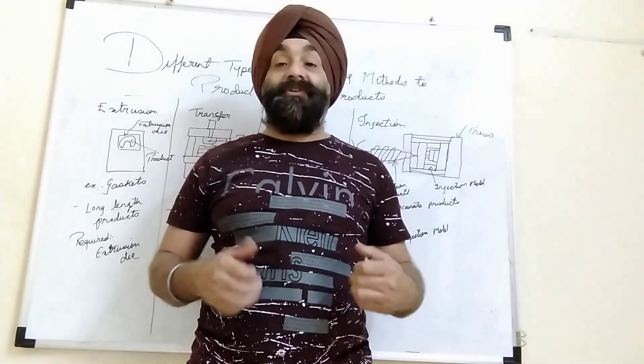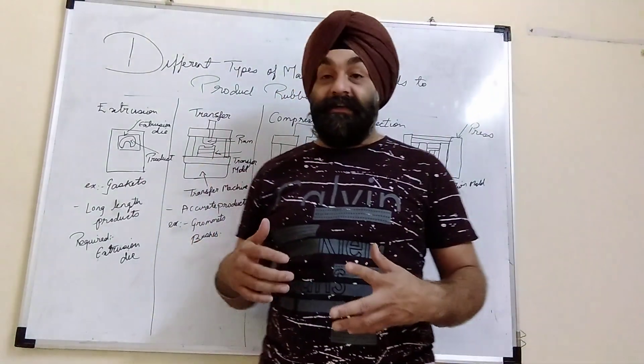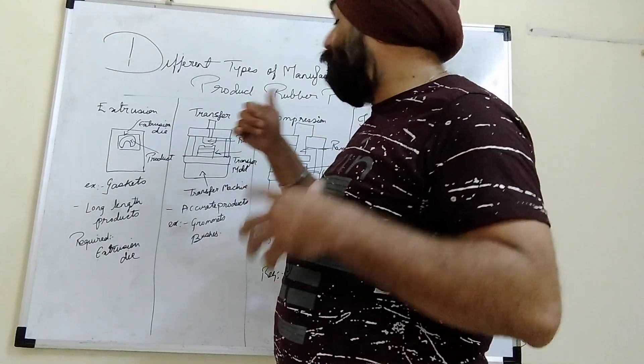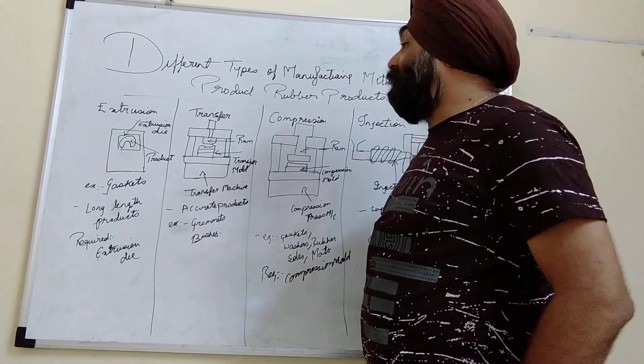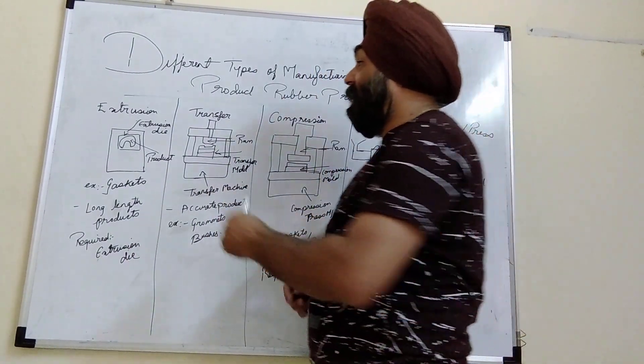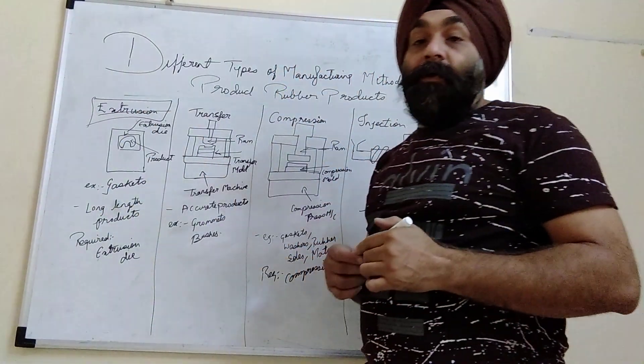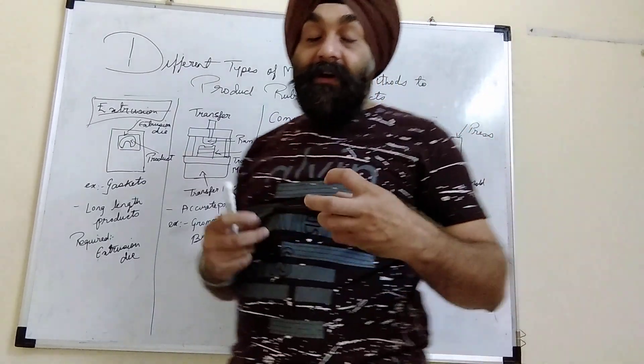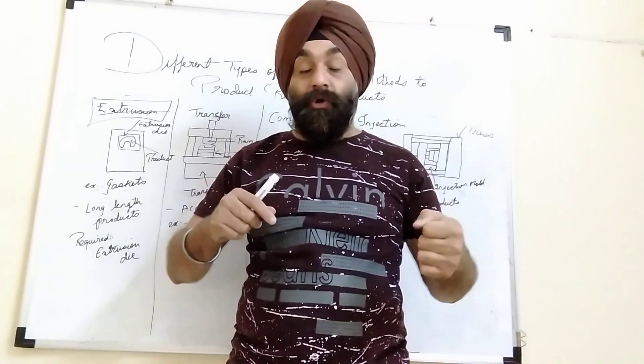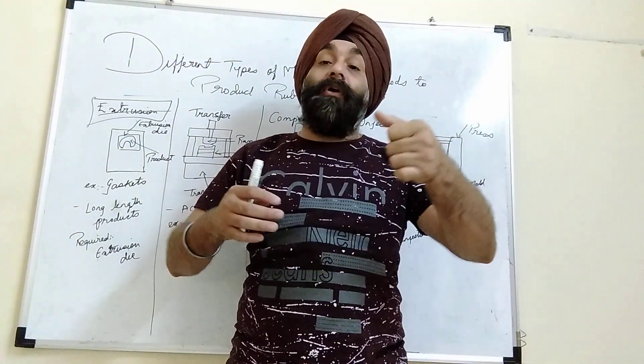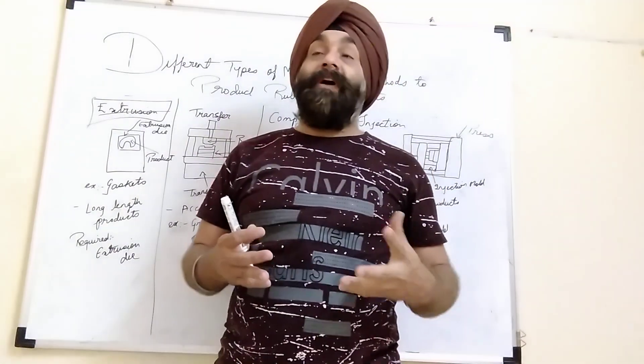So guys, let's start with the different methods to produce rubber products. The first method is extrusion die. With the help of extrusion, whenever you've seen a gasket on your fridge door, car door, windows, or anywhere sealing is required, we are using the extrusion method.